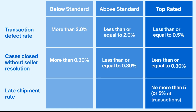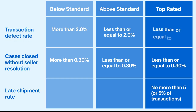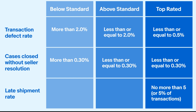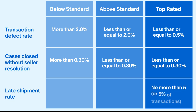Here is a summary of the different requirements for each seller level. To maintain top rated level status you need to maintain a transaction defect rate less than or equal to 0.5 percent associated with no more than three different buyers, cases closed without seller resolution no more than two or 0.3 percent of transactions, and a late shipment rate no more than five or five percent of transactions.